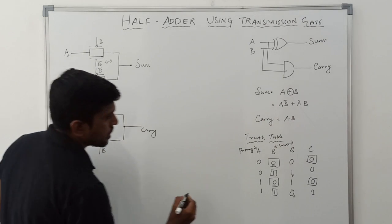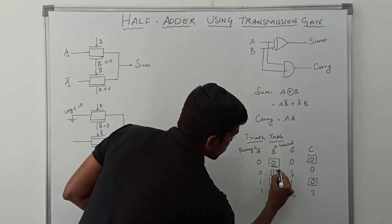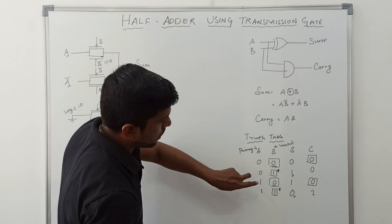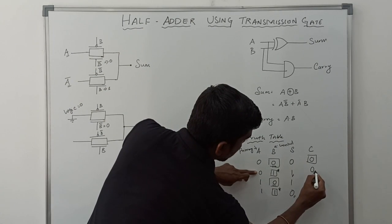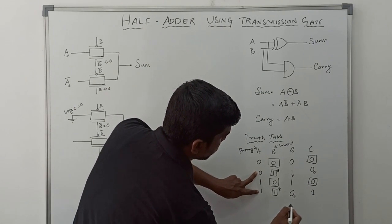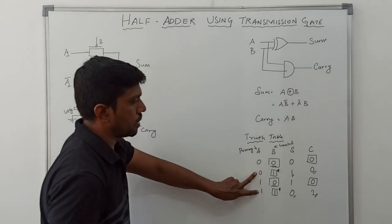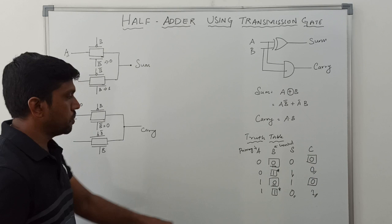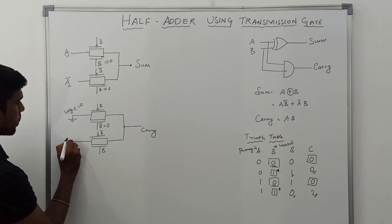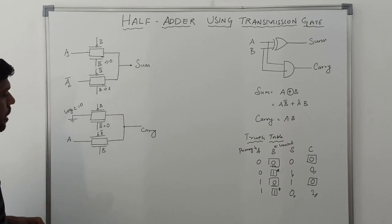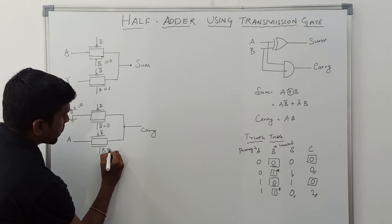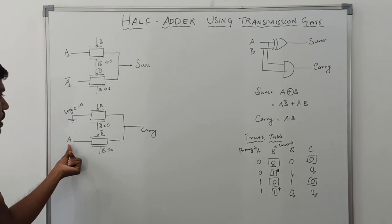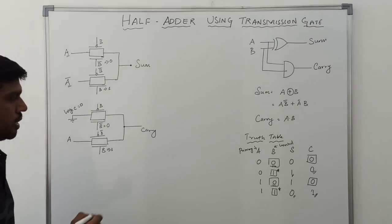Next case, B value is 1. When B=1: A=0 gives carry=0, A=1 gives carry=1 — so carry equals A in this case. The input of the second transmission gate is A. When B equals 1, whatever value is present in A is transferred to carry.